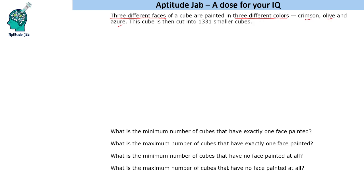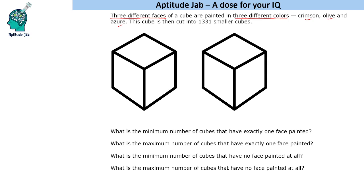We have to visualize how these three faces can be painted and what the positioning of the three painted faces will be. Let us visualize this through a diagram. One possibility is that we have crimson, olive, and azure as three adjacent faces painted in three different colors.